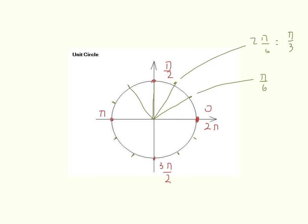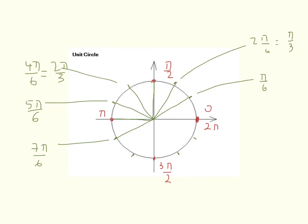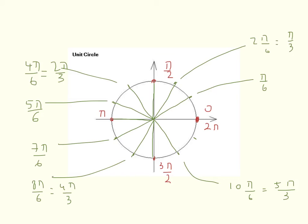Now this angle will be 4 parts, so it will be 4 pi over 6, that simplifies to 2 pi over 3. This angle here will be 5 pi over 6. Then 6 pi over 6, that's pi. Then 7 pi over 6. Then 8 pi over 6, that simplifies to 4 pi over 3. Then 9 pi over 6, that's 3 pi over 2. This is 10 pi over 6, which simplifies to 5 pi over 3. Then 11 pi over 6, and then 12 pi over 6, that gives you 2 pi.